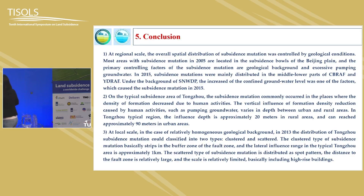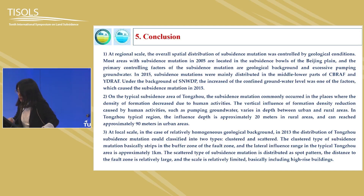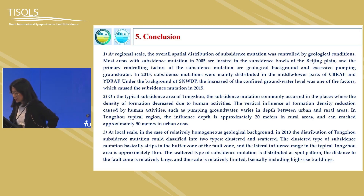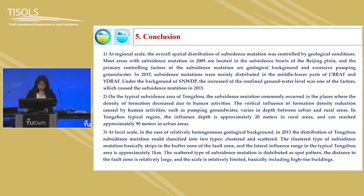Let's see the conclusions. We combined multi-source datasets to understand the subsidence mutations in Beijing Plain. At the regional scale, the overall spatial distribution of subsidence mutations is controlled by geological conditions. In the typical subsidence area of Tongzhou, the influence depth is nearly 20 meters in rural areas and can reach about 90 meters in urban areas. At the local scale in 2013, the scattered type of subsidence mutations is distributed in small areas and basically includes high-rise buildings. That's all. Thank you for your attention.